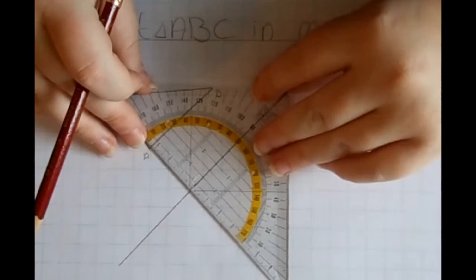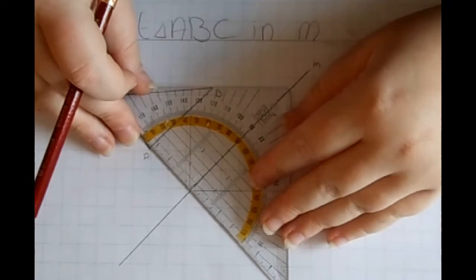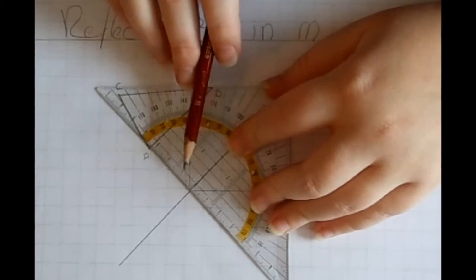I need to adjust this correctly and make sure it's perfectly positioned. Then I'm going to see how far away point A is from the mirror line.